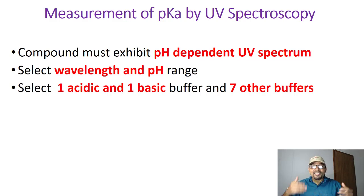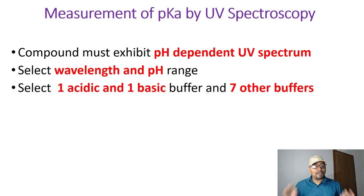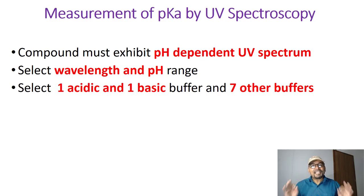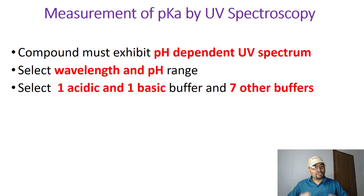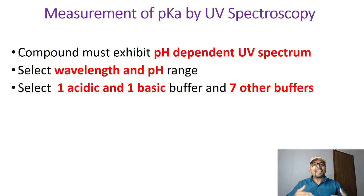Once you understand the rough pKa value is around 5, then select seven different pH values very close to 5 — for example, 5 plus or minus 0.2, 5 plus or minus 0.4, and 5 plus or minus 0.6. So you prepare seven different buffers based on the rough estimation of the pKa. Once you have one acidic solution, one basic solution, and seven different pH buffers, you can proceed to the next level.